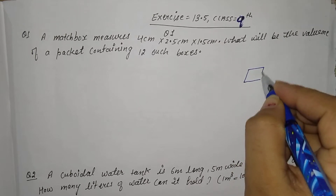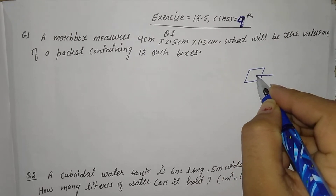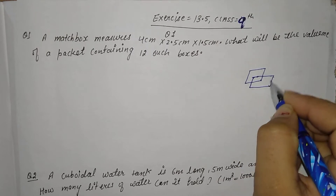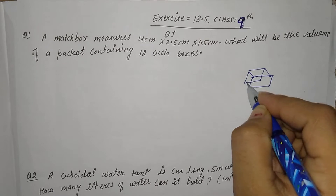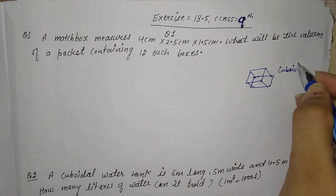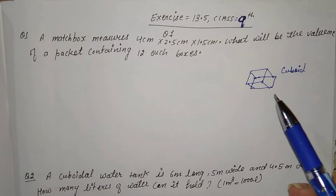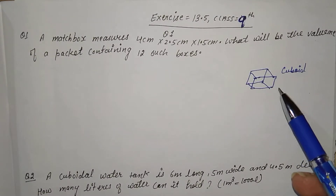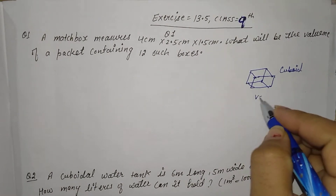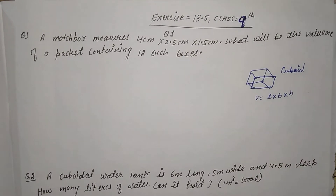Matchboxes — what shape is it? Cuboid shape. So first of all, we will take the volume of a cuboid. What is the volume of a cuboid? L into B into H — means length into breadth into height.